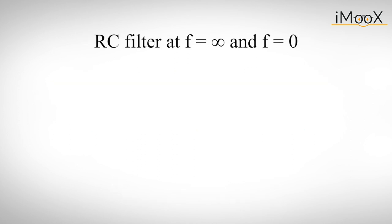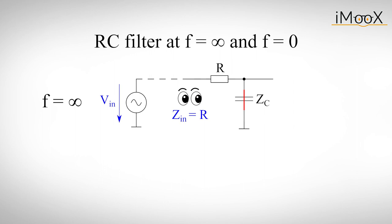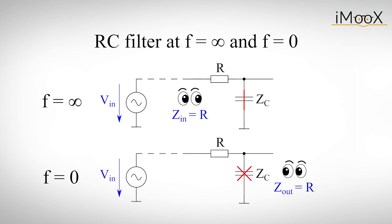It's easy if we think of the worst case for both, that is minimum input impedance and maximum output impedance. In order to do this we look at the two extremes regarding the input signal frequency. In both cases the influence of the capacitor vanishes, either because it behaves like a short or like an open circuit. The answer to the question is therefore astonishingly simple. It's R for both cases.